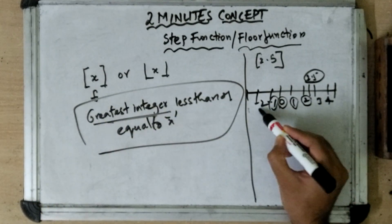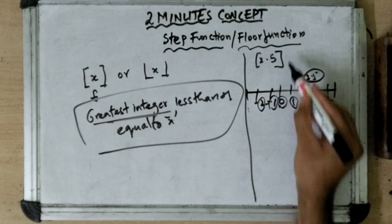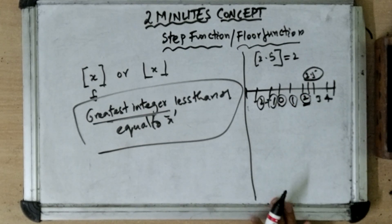2, 1, 0, minus 1, all these are integers. Which is the greatest among all? 2. So the answer for this is 2.